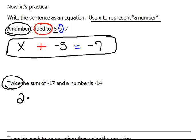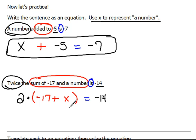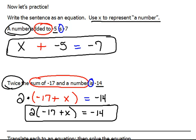The next problem says twice the sum of negative 17 and a number is negative 14. Twice means two times. The sum of negative 17 and a number tells us to add up two things: negative 17 and some unknown number. We already said we use x instead of a number. Is is a key word for equals, and then we have negative 14. You don't have to write times and then the parentheses—you can just put the parentheses. That means multiplication and looks better. So, our final answer is 2(-17 + x) = -14.